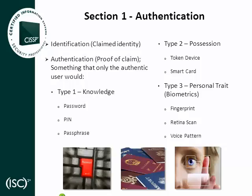Type 1 authentication is based on something that only the authentic entity would know, for example, a password or a passphrase. Type 2 authentication is based on something that only the authentic entity would have in his or her possession, for example, a token device, a memory card, or a smart card. Type 3 authentication uses biometrics for proof of identity, based on the unique personal traits we all possess, like fingerprints, retina blood vessel patterns, and voice patterns. Strong system authentication uses two or more of the three factors.